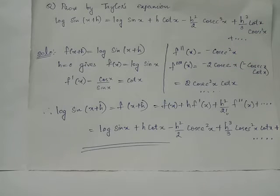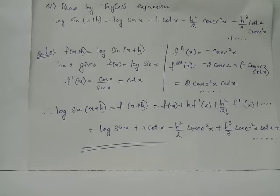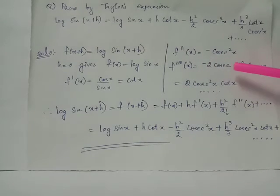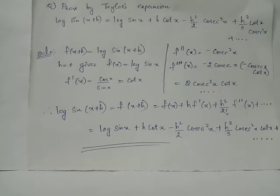To find f'''(x), we take the derivative of minus cosec squared x with respect to x, which is minus 2 times cosec x into the derivative of cosec x. The derivative of cosec x equals minus cosec x into cot x. Therefore, f'''(x) equals 2 cosec squared x into cot x, since negative times negative becomes positive and cosec x times cosec x becomes cosec squared x.